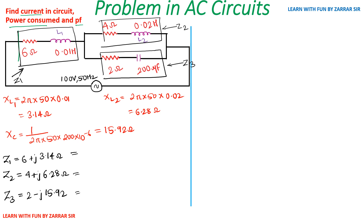To convert from rectangular to polar form, magnitude = √(a² + b²) and angle = tan⁻¹(b/a). Converting: Z1 = 6.77 ∠27.62°Ω, Z2 = 7.48 ∠57.5°Ω, and Z3 = 16.04 ∠−82.83°Ω. You can use a scientific calculator for these calculations.